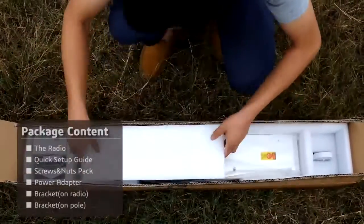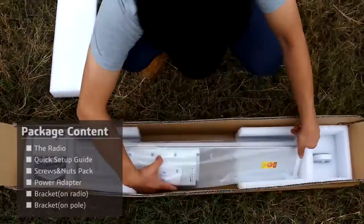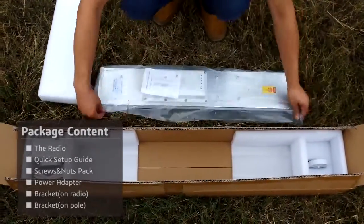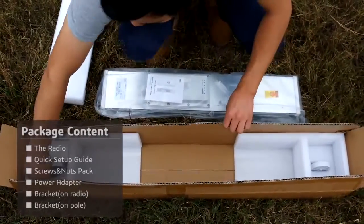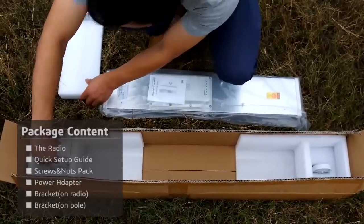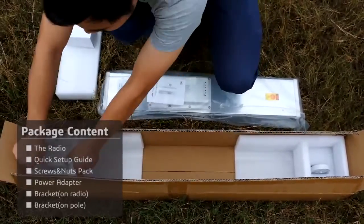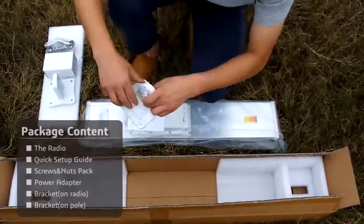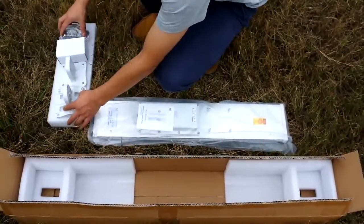Open the package of the base station. You'll find the base station with a quick setup guide inside the plastic bag, and then the screws and nuts pack with two groove brackets inside. The 24 volt POE adapter and two brackets used for mounting the radio.